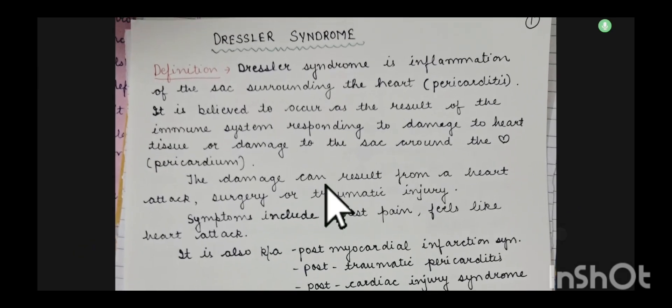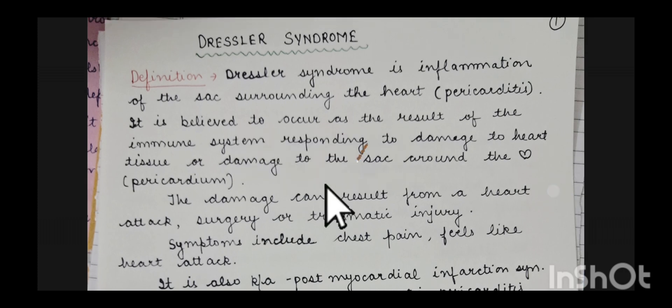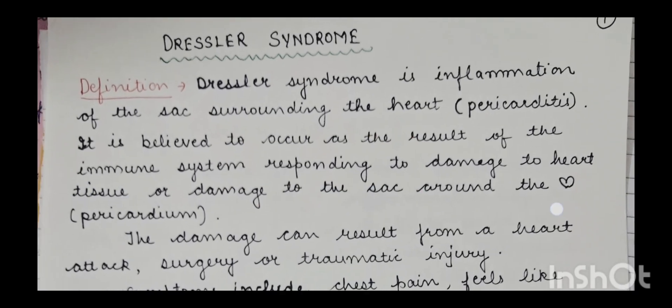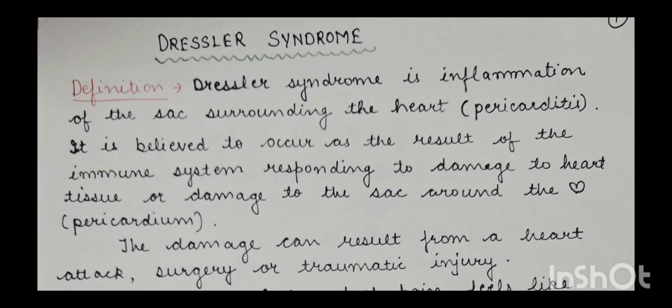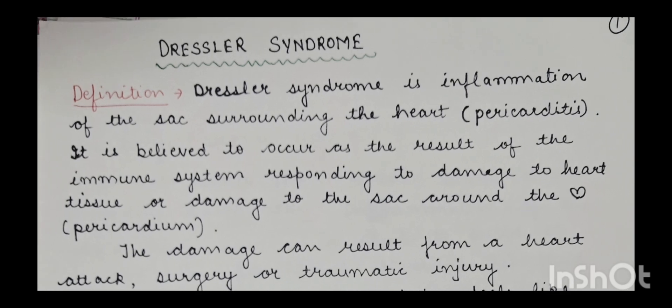Today's topic is Dressler syndrome. What is Dressler syndrome? It is due to the inflammation of the covering — the sac around the heart — that is the pericardium. Inflammation of the pericardium is called pericarditis, so Dressler syndrome is the inflammation of the sac surrounding the heart, that is pericarditis.